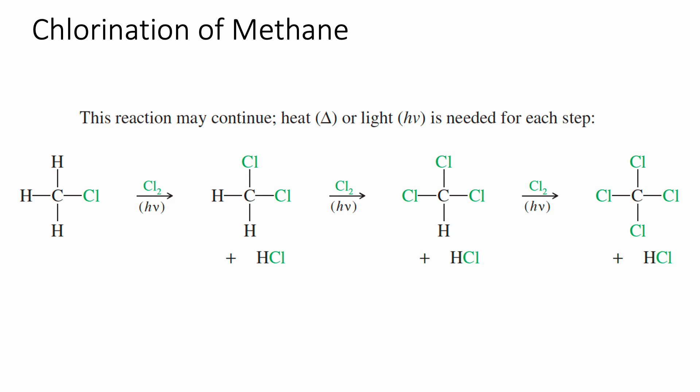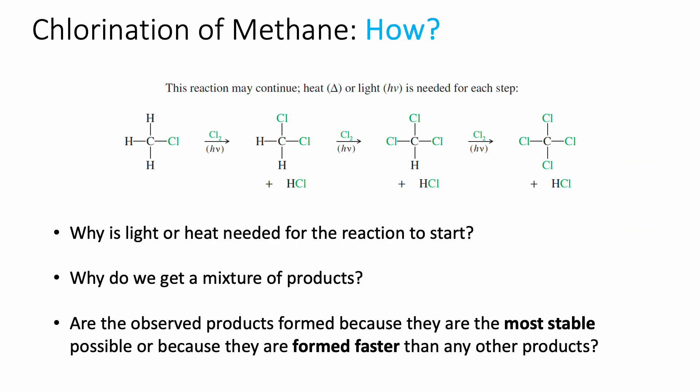This raises several questions about how the reaction occurs: Why is light or heat needed to start it? Why do we get a mixture of products? Are the observed products formed because they're the most stable possible, or because they form faster? Those are generally two different ways products might accumulate — they might be the most stable product, or they might form very quickly.